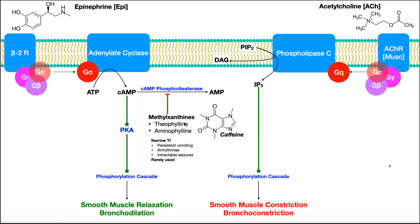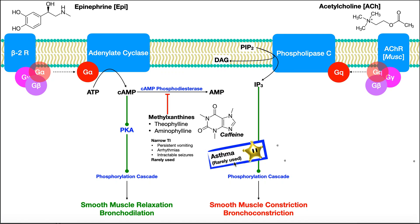The two specific methylxanthines used would be theophylline, used more in an outpatient long-term setting, and aminophylline, used more in an inpatient short-term setting. However, methylxanthines are not used very often — mainly if the other drugs don't work or are contraindicated. One of the reasons they're not used as much is because they have a really narrow therapeutic index — a very small window between where they're therapeutic and where they're toxic. Side effects with excessive amounts include persistent vomiting, arrhythmias, and intractable seizures. Methylxanthines are rarely used in asthma and not used in COPD.